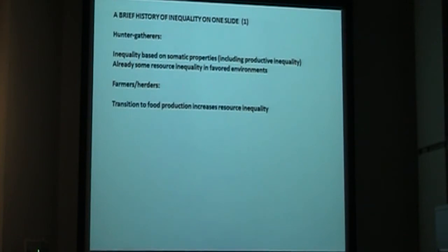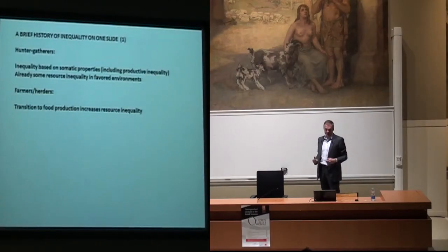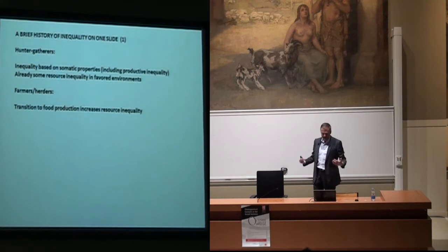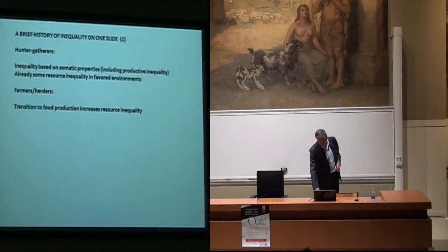We can fill in the first half of what I call a brief history of inequality on one slide. You have limited inequality amongst hunter-gatherers — even though we shouldn't overestimate it — and then increasing inequality with the transition to food production based on farming and herding.